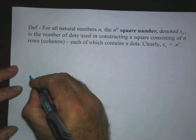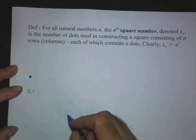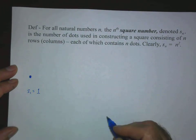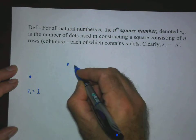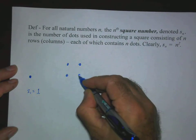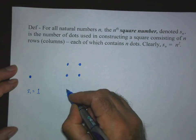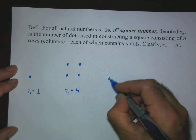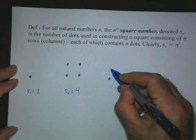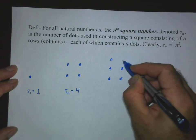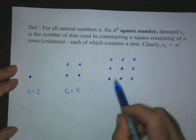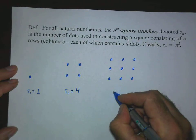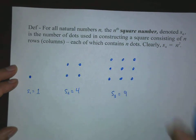Let's look at a few examples. Here is S sub 1. It consists of one row and one column of dots. So the first square number is 1. Now we have two rows each of two dots, or two columns each of two dots. So this is our second square number, four dots total. And one more: we have three rows of three dots each, or three columns of three dots each. This is our third square number, S sub 3, which equals nine.